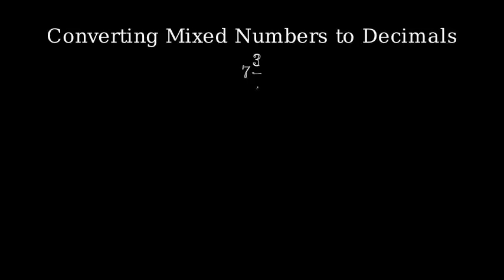Let's learn how to convert a mixed number to a decimal. We'll convert 7 and 3 quarters to a decimal.